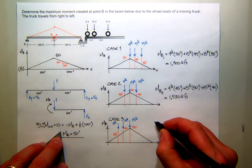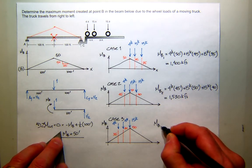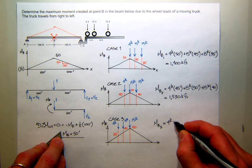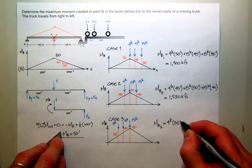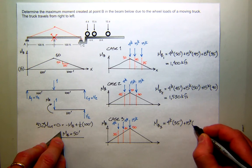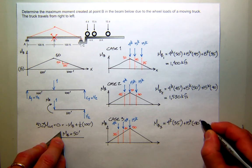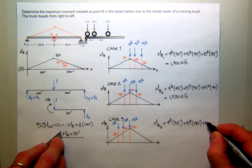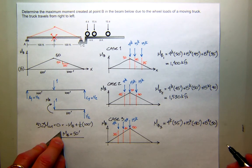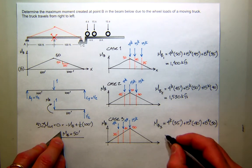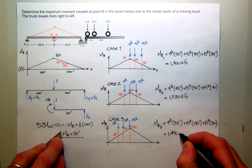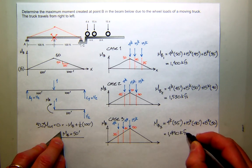Now, the moment at B for case 3. Start at the front. I have 4 kips times 35 feet plus 15 kips times 40 feet plus 15 kips times 50 feet. That might be the biggest one, huh? 1,490. Oh, not quite. 1,490.